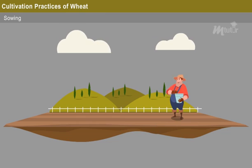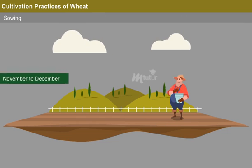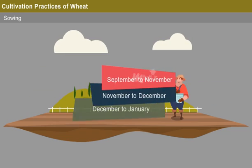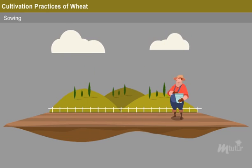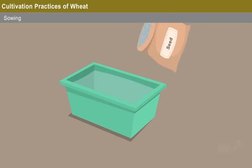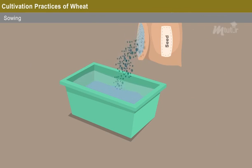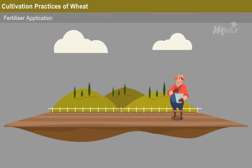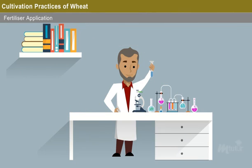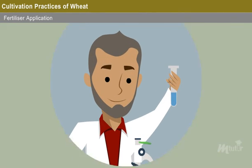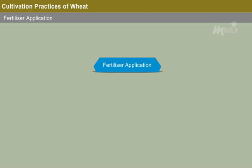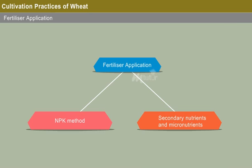Sowing: The best sowing time for wheat plantation is from November to December, though there may be slight variations for each region. To reduce late sowing losses, seeds can be soaked in water overnight before sowing. Fertilizer Application: Fertilizer application should normally be carried out on the basis of soil testing results. After soil testing, the fertilizer requirement is calculated and applied through the NPK method, while secondary nutrients and micronutrients can be applied based upon the status of the soil.